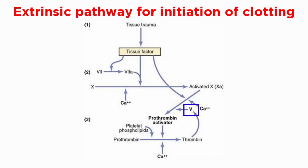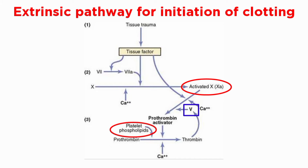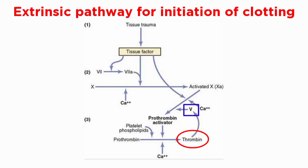At first, factor 5 in the prothrombin activator complex is inactive, but once clotting begins and thrombin starts to form, the proteolytic action of thrombin activates factor 5, which becomes an additional strong accelerator of prothrombin activation. In the final prothrombin activator complex, activated factor 10 is the actual protease that causes splitting of prothrombin to form thrombin. Activated factor 5 greatly accelerates this protease activity, and platelet phospholipids act as a vehicle that further accelerates the process. Note especially the positive feedback effect of thrombin acting through factor 5 to accelerate the entire process once it begins.